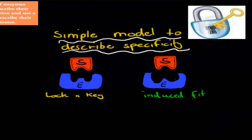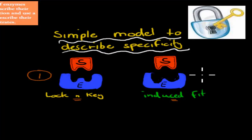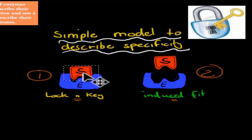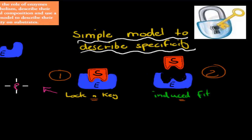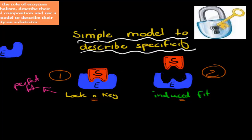Now we need to use a simple model to describe specificity. There are two models: the lock-and-key model and the induced-fit model. For lock-and-key, the substrate is like a key and it fits into the enzyme perfectly — it's a perfect fit. The substrate comes down, fits perfectly, breaks down into products, and leaves.